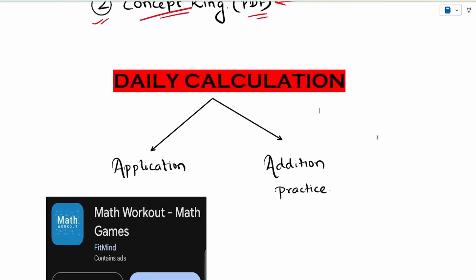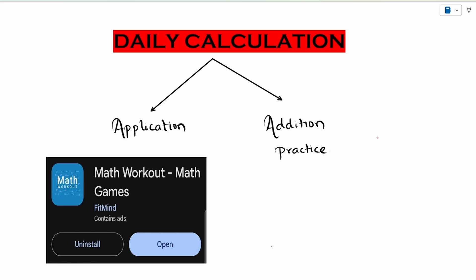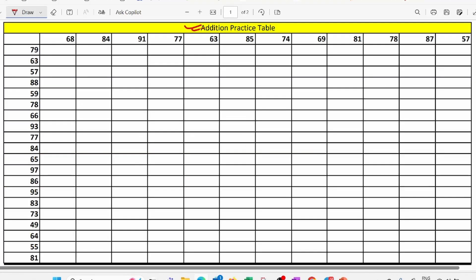Now along with following this four step strategy, you have to focus on your calculation speed, which is very important to clear this examination. Now for calculation, you can do two things. First is the application that I am telling you, the application name is Math Workout. It is a very good application. You can check out on Play Store and you can practice on this app in your free time. Second thing is you have to focus on everyday addition practice. And for that I am giving you one sheet. Now this is the addition table that you have to practice daily from. I will share this sheet on my telegram channel.